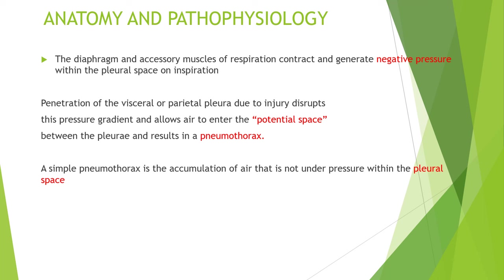Anatomy and pathophysiology: The diaphragm and accessory muscles of respiration contract and generate a negative pressure within the pleural space on inspiration. Penetration of the visceral or parietal pleura due to injury disrupts this pressure gradient, allowing air to enter the potential space between the pleura and result in pneumothorax. A simple pneumothorax is the accumulation of air that is not under pressure within the pleural space.